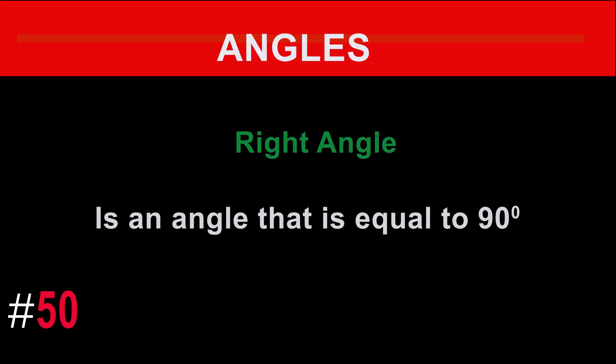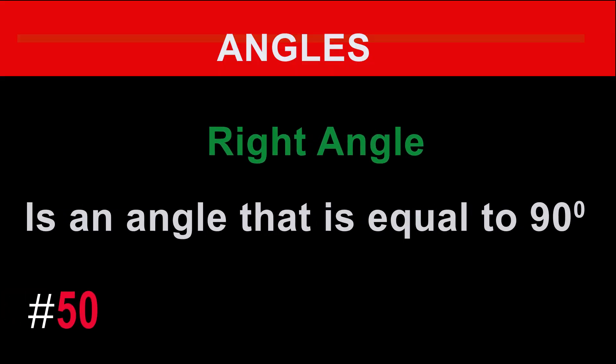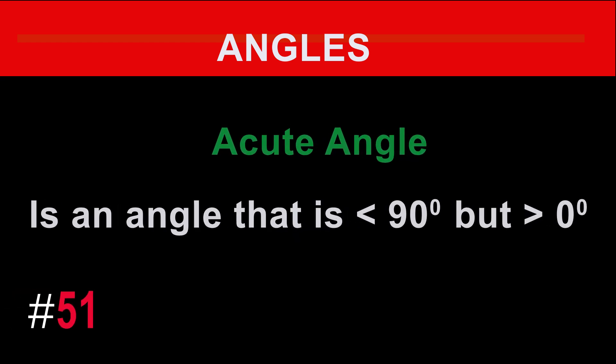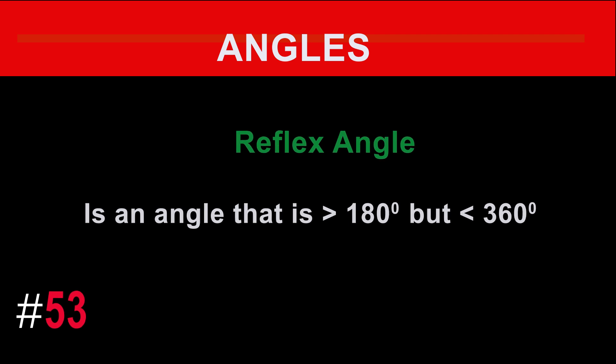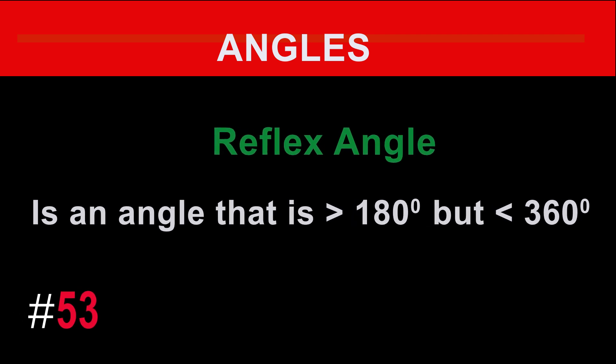A right angle is an angle that equals 90 degrees. An acute angle is an angle that is less than 90 degrees but greater than zero degrees. An obtuse angle is an angle that is greater than 90 degrees but less than 180 degrees. A reflex angle is an angle that is greater than 180 degrees but less than 360 degrees.